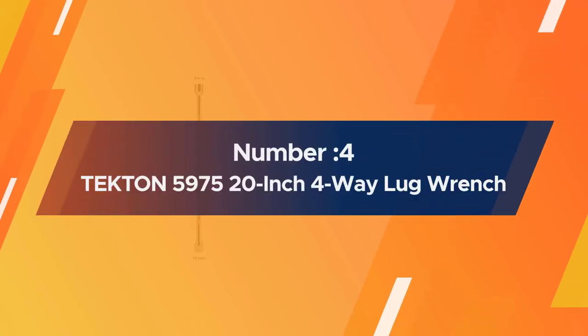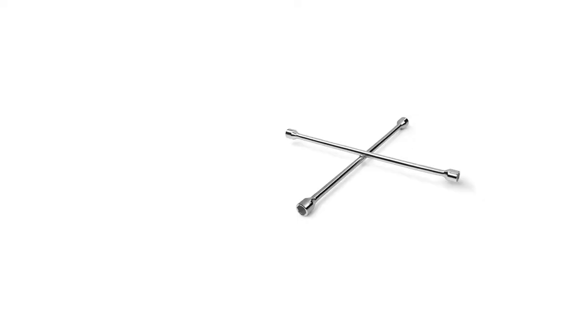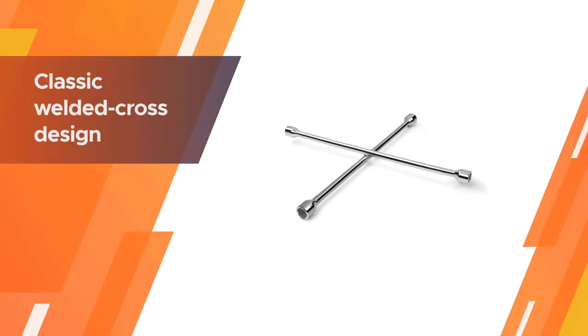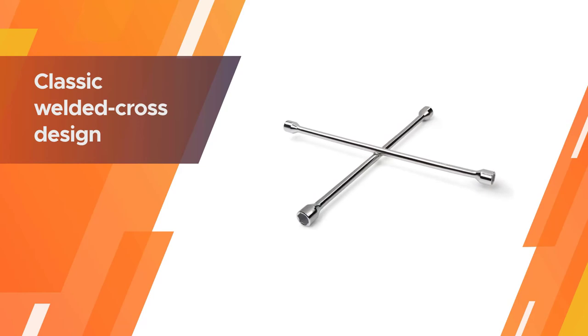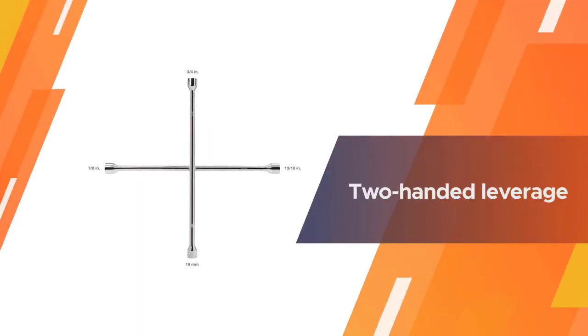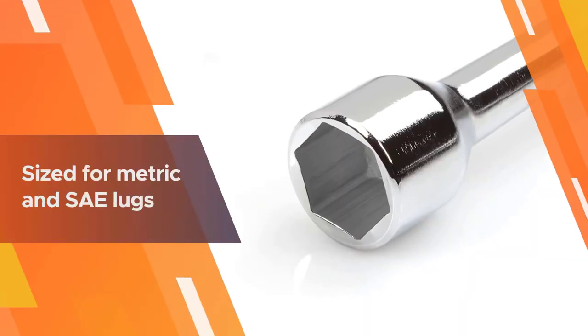Number four: Tekton 5975 20-inch 4-Way Lug Wrench. The classic welded cross design allows for two-handed leverage to break loose stubborn nuts and the balance to quickly spin them. Another reason the Tekton is one of the best lug wrenches for the money is that it's a universal wrench, sized for metric and SAE lugs.